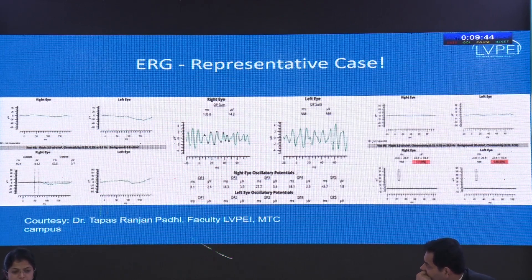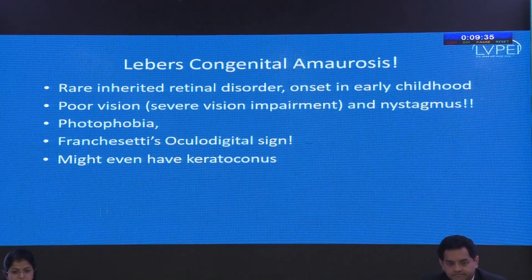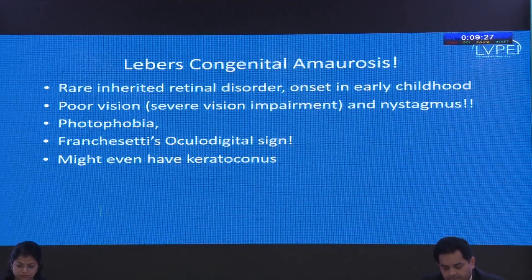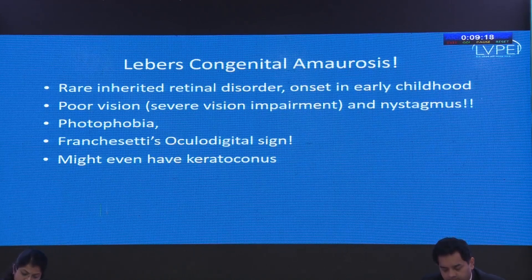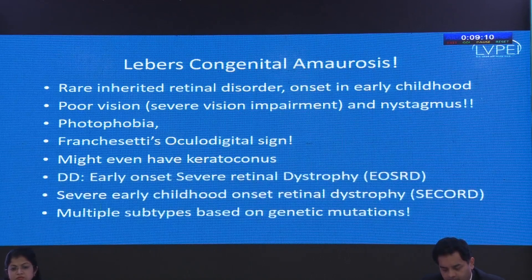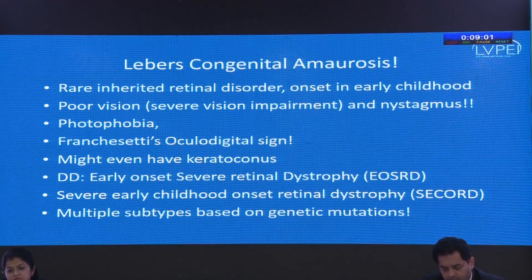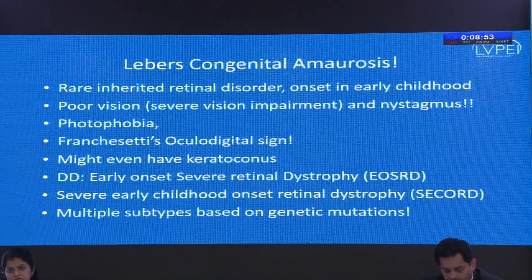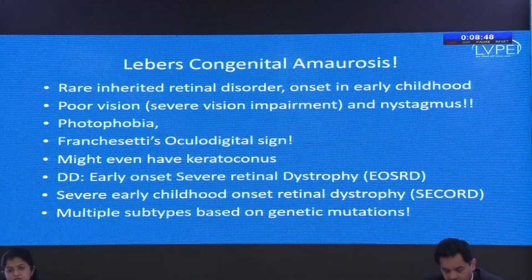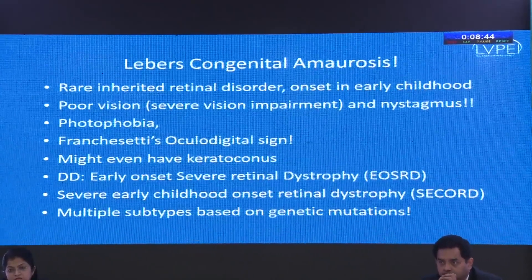For the representative LCA case from Dr. Thapas, there were no reproducible B waves in either the scotopic or photopic responses, which clinched the diagnosis. Briefly, LCA is a rare inherited retinal disorder with onset in very early childhood, presenting with severe vision impairment, nystagmus with wandering eye movements, photophobia or photo aversion, and the Franceschetti ocular digital sign. Patients may even develop keratoconus. Important differentials are early onset severe retinal dystrophy (EOSRD) and severe early childhood onset retinal dystrophy (SECORD), which have slightly better visual potential.